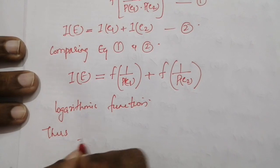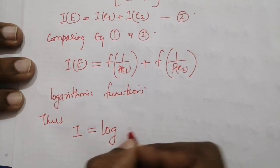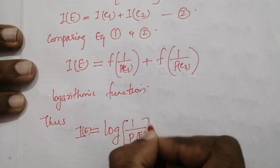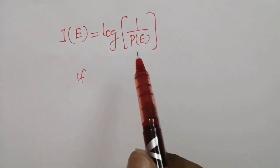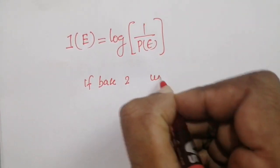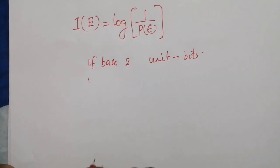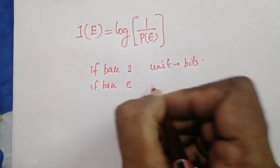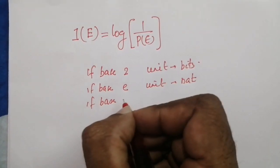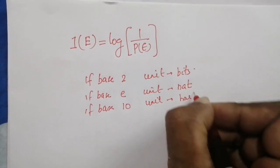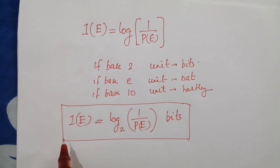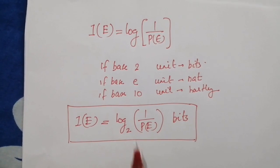Thus, information I(e) is defined as log(1/p(e)). The unit of information depends upon the base of the logarithm used: if the base is 2, the unit is bits; if the base is e, the unit is nats; if the base is 10, the unit is hartleys. Throughout our syllabus we will use the definition: I(e) = log₂(1/p(e)) bits.